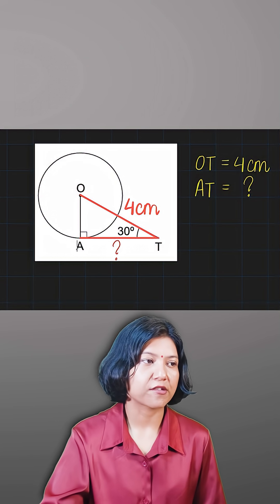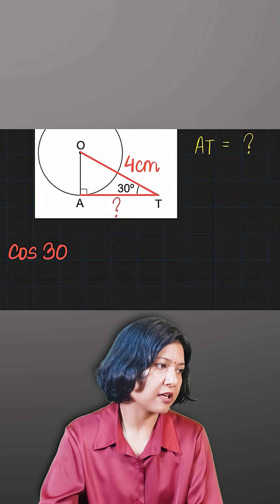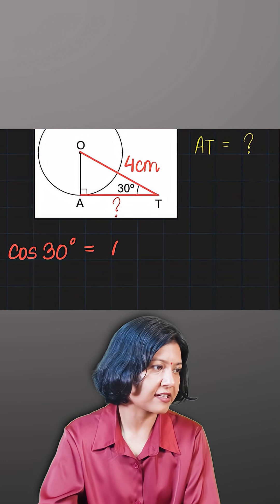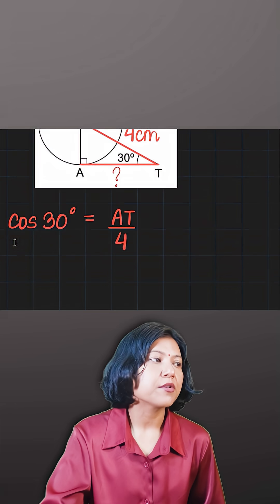So I will say that cos of the angle given to me has to be equal to the ratio of the side AT upon the hypotenuse, which is 4. And now you know the value of cos 30°, I guess, which is the same as sine 60°. It is root 3 upon 2.